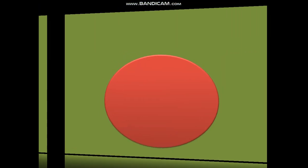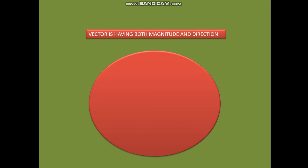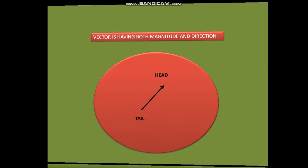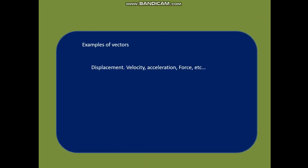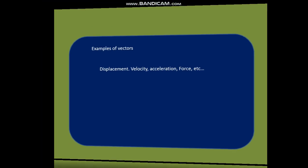In Mathematical Methods Part 1, we are going to talk about vectors, which have magnitude and direction. Let us take a vector — this is the tail of the vector and that's the head. Some examples of vectors are displacement, velocity, acceleration, force, etc.